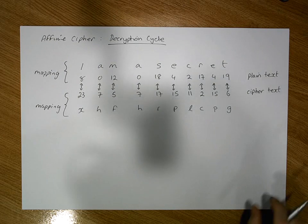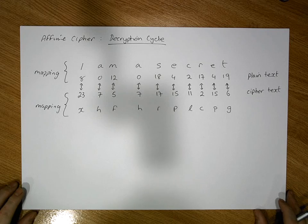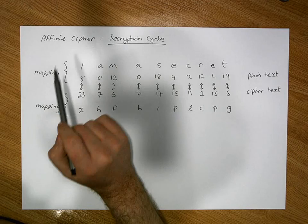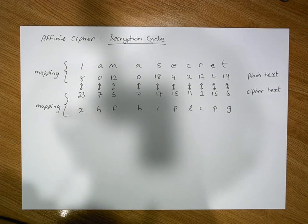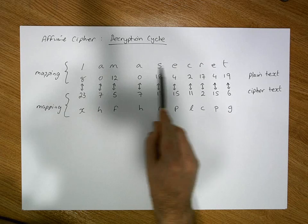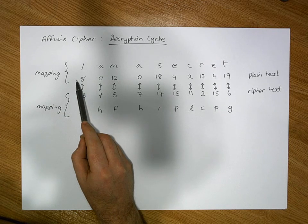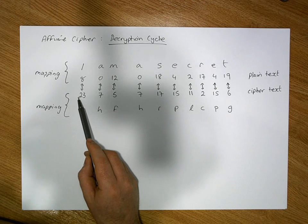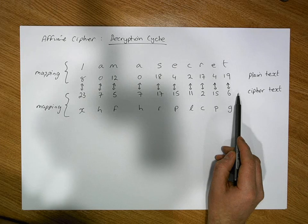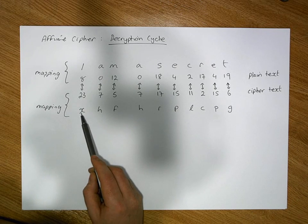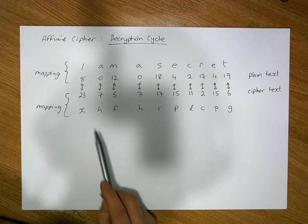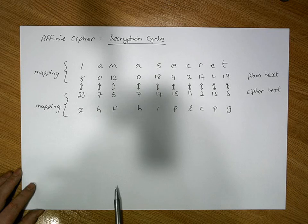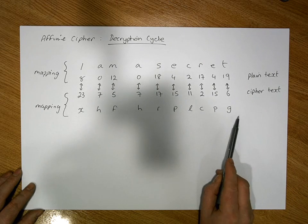Hi guys, this is Jonathan Lambert with the Mathematics Development and Support Service at the National College of Ireland. This short video is the second in a series dealing with the affine cipher. The previous video dealt with the encryption cycle, where we took a piece of plain text, mapped it to its numerical representation, passed it into the encryption algorithm to give us our cipher text, and remapped it back to the actual characters in our alphabet. This phase is going to concentrate on the decryption phase — going from cipher text back into plain text.